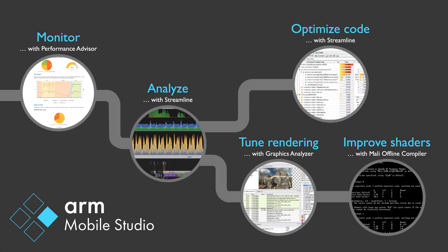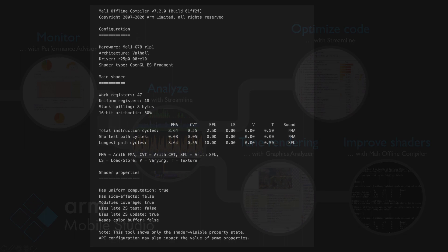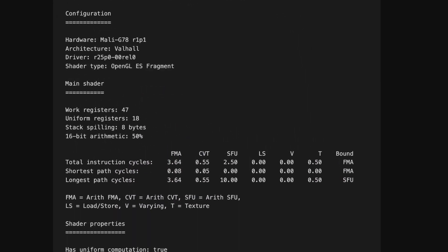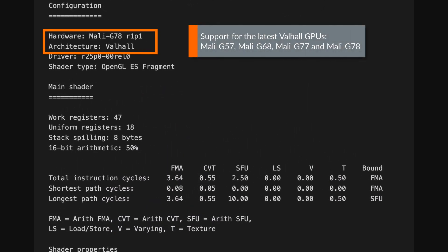In the latest version of Mobile Studio, we've enhanced Mali Offline Compiler reports to give you better visibility of the expected performance of your shader programs on any of the available Mali GPU targets. We've added support for the latest Mali GPUs, based on ARM's newest GPU architecture, Valhall.